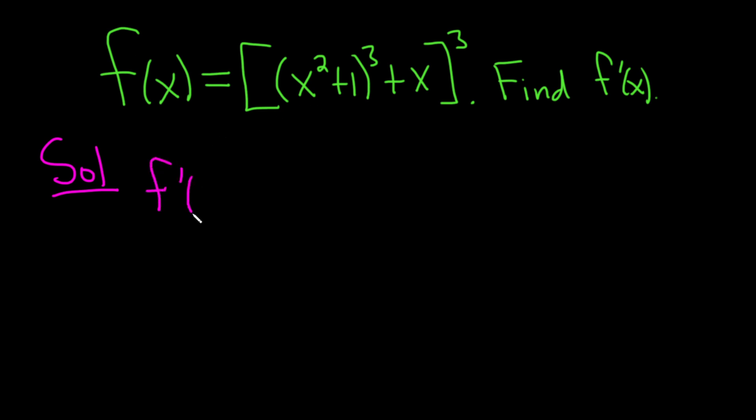f prime of x equals. All right, so we've got all of this stuff here being raised to the third power. So it's something to a power. So whenever you have something to a power, you can just apply what's called the chain rule. The chain rule says you basically take the derivative of the outside, which is just this power function, something cubed, and then you evaluate it at the inside, then you multiply by the derivative of the inside function.